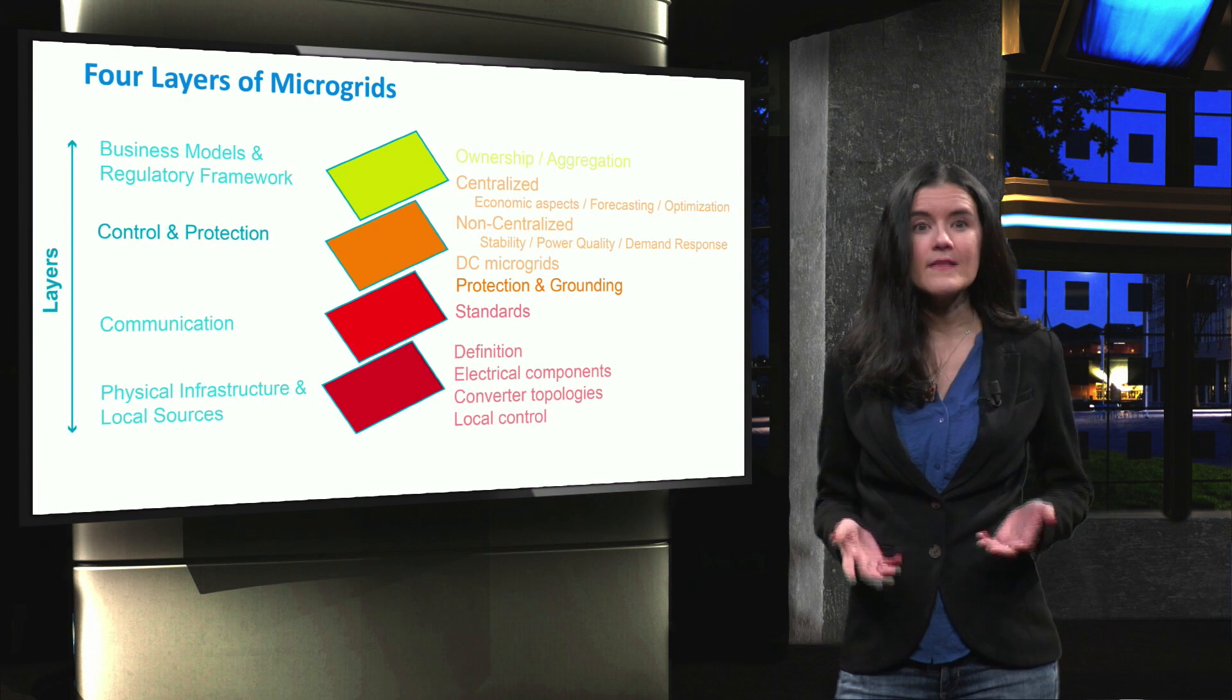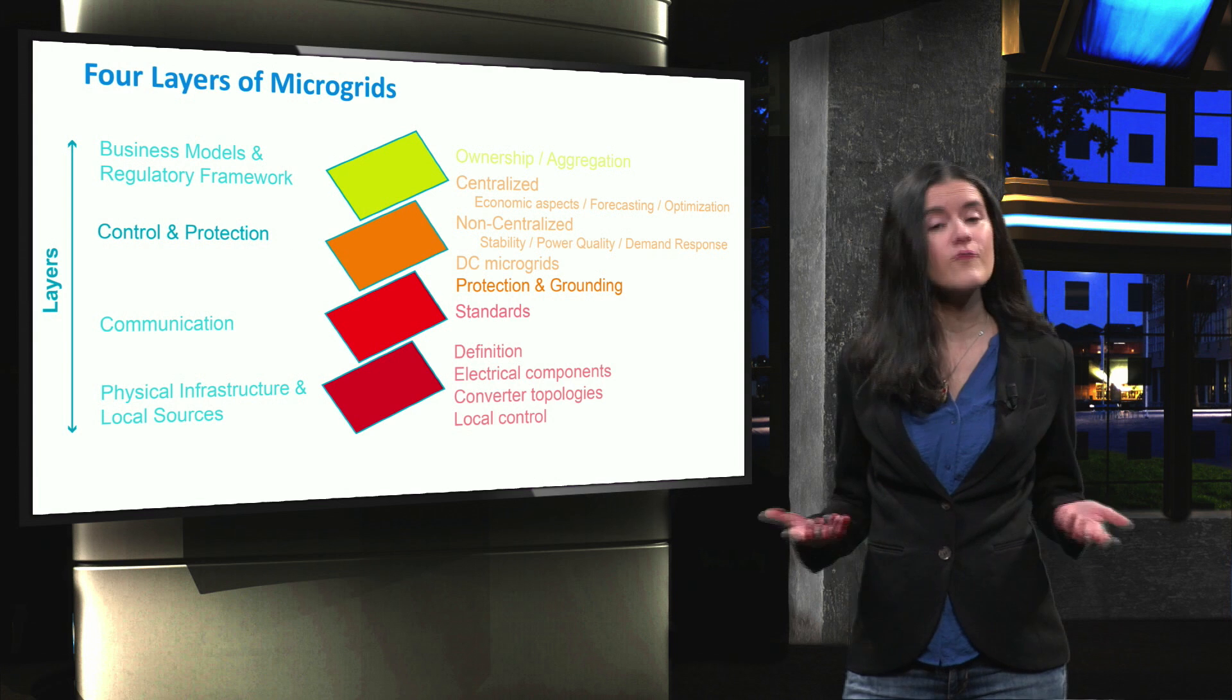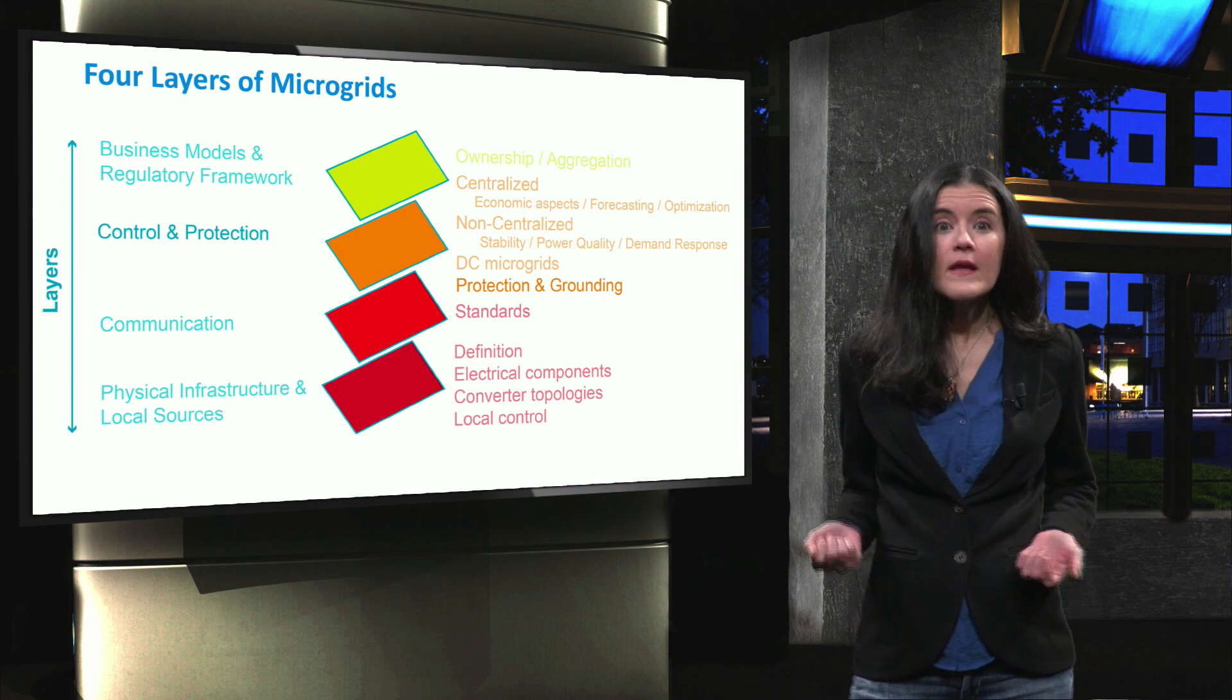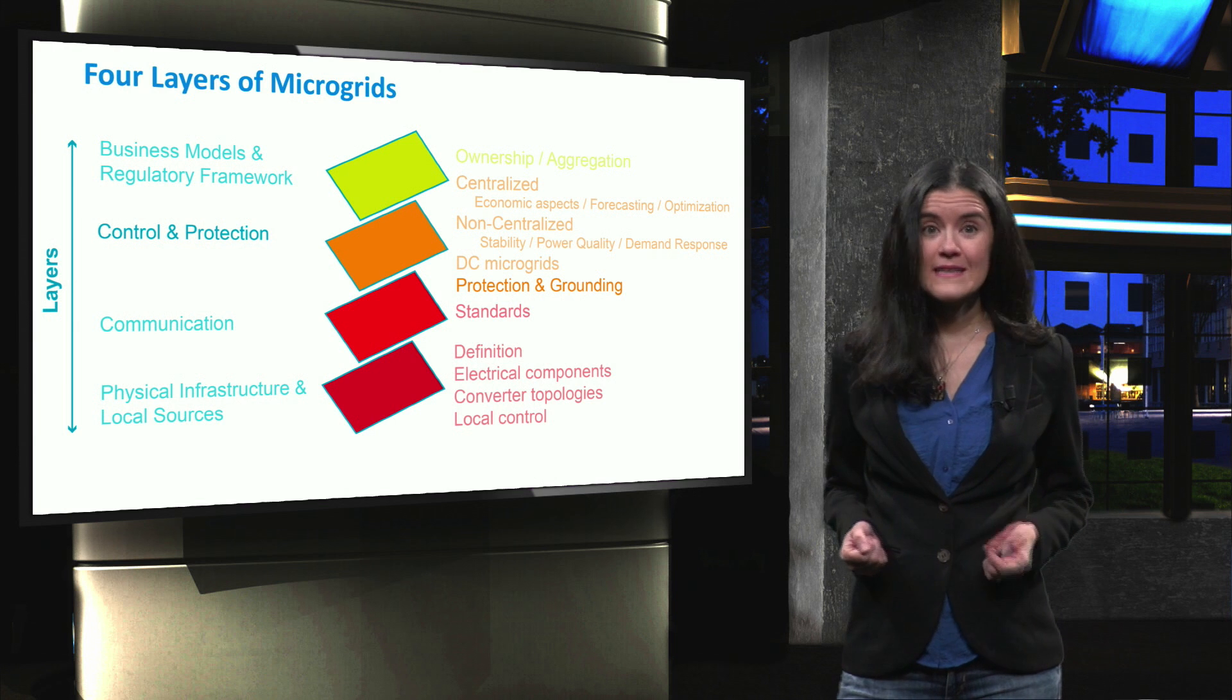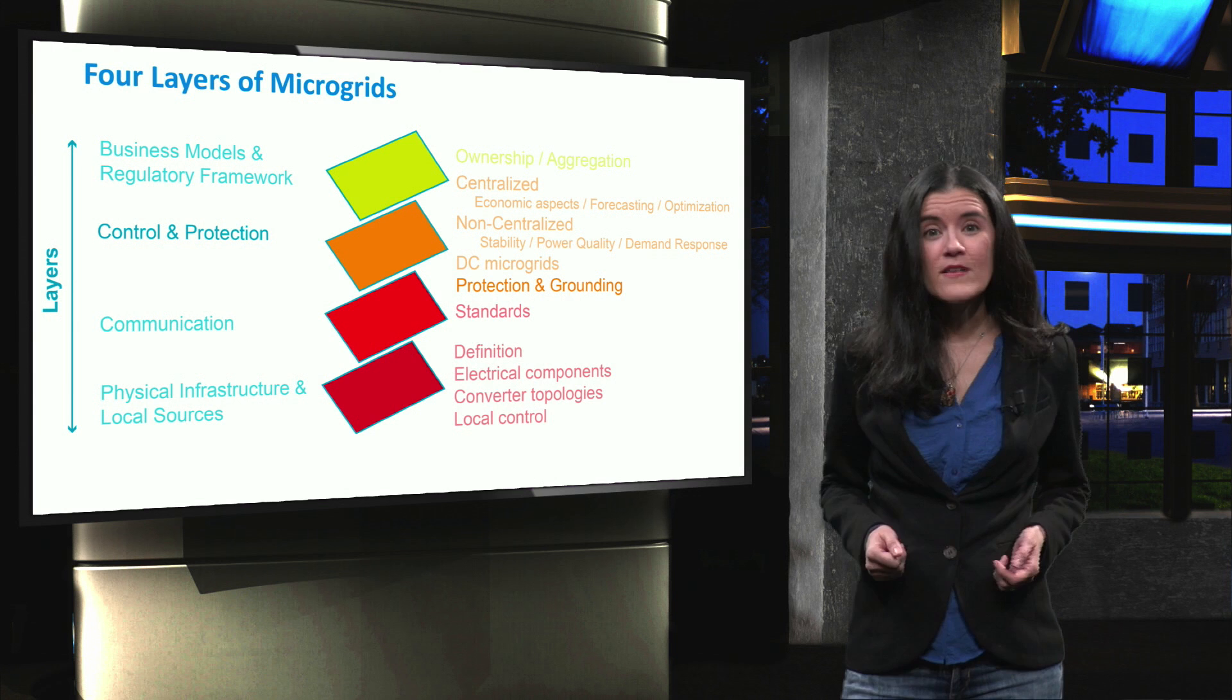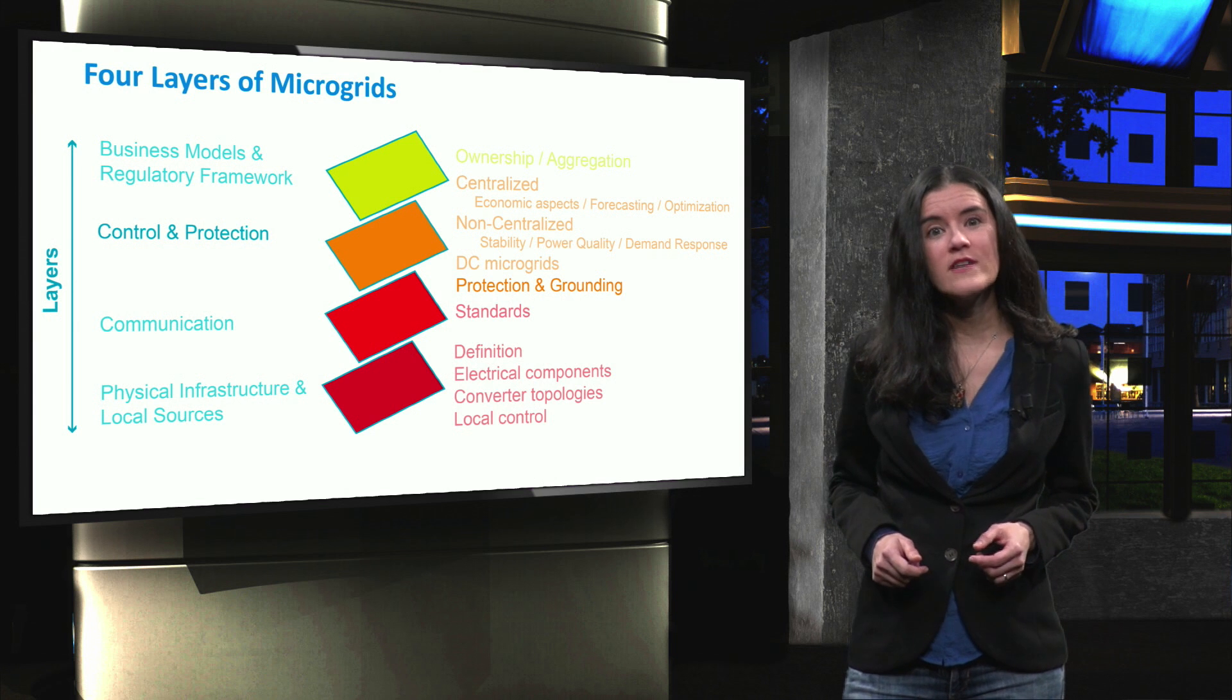We have already seen that a microgrid can be divided into four layers. On the lower layer, we have the physical infrastructure. The second level is occupied by the communication layer, where standards are set to allow data exchange between devices.